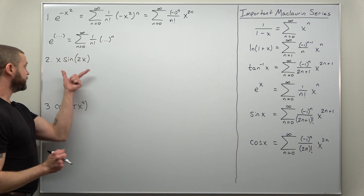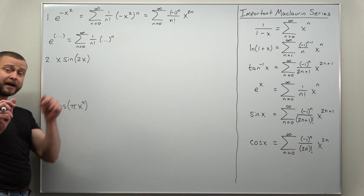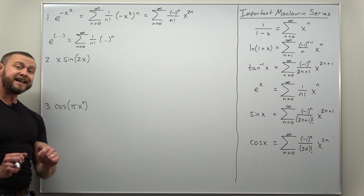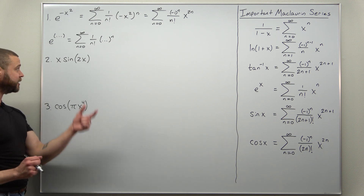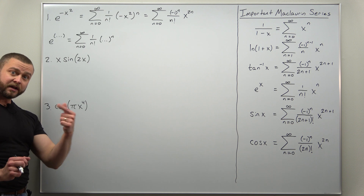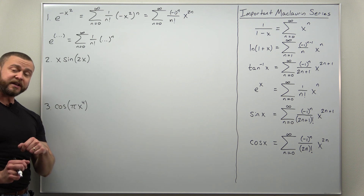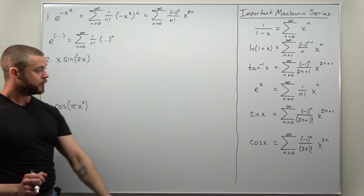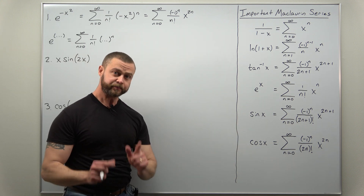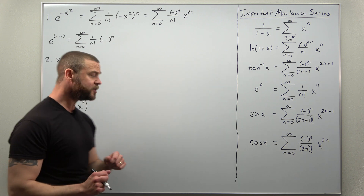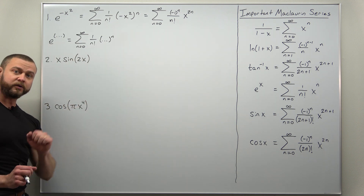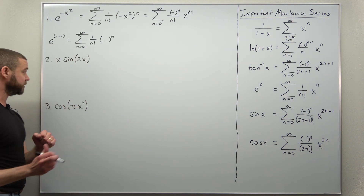Our second function, x times sine of 2x, is very similar. We're going to take as our starting place the Maclaurin series for sine of x and make a replacement — we'll replace x with 2x. We do need to be careful with the factor of x out front, but we'll deal with that separately.